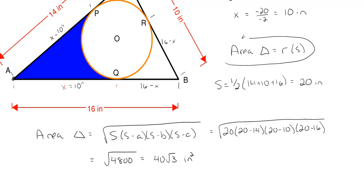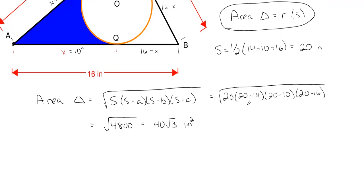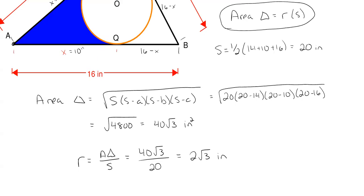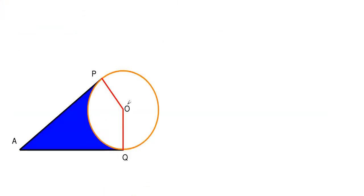Using the formula between a triangle and its inscribed circle, we can find the radius. The radius equals the area of the triangle divided by S, which is 40 square roots of 3 divided by 20. So the radius is 2 square roots of 3 inches. This means A to Q is 10 inches, A to P is 10 inches, and the radius from O to the outside of the circle is 2 square roots of 3 inches.